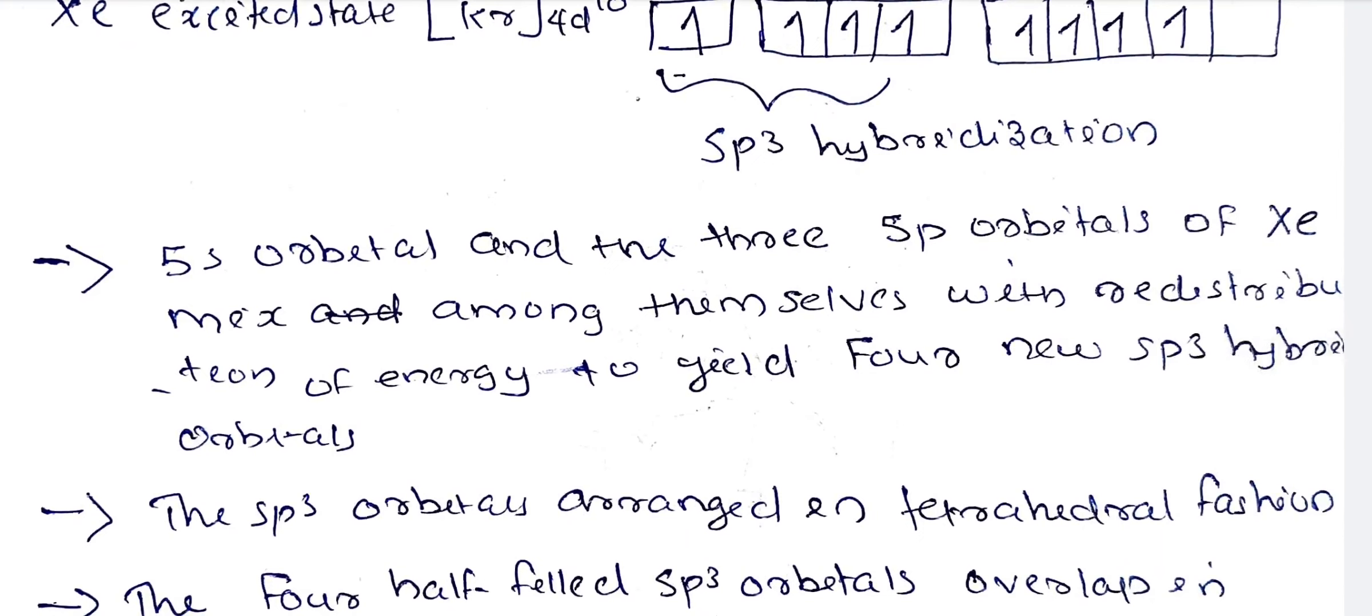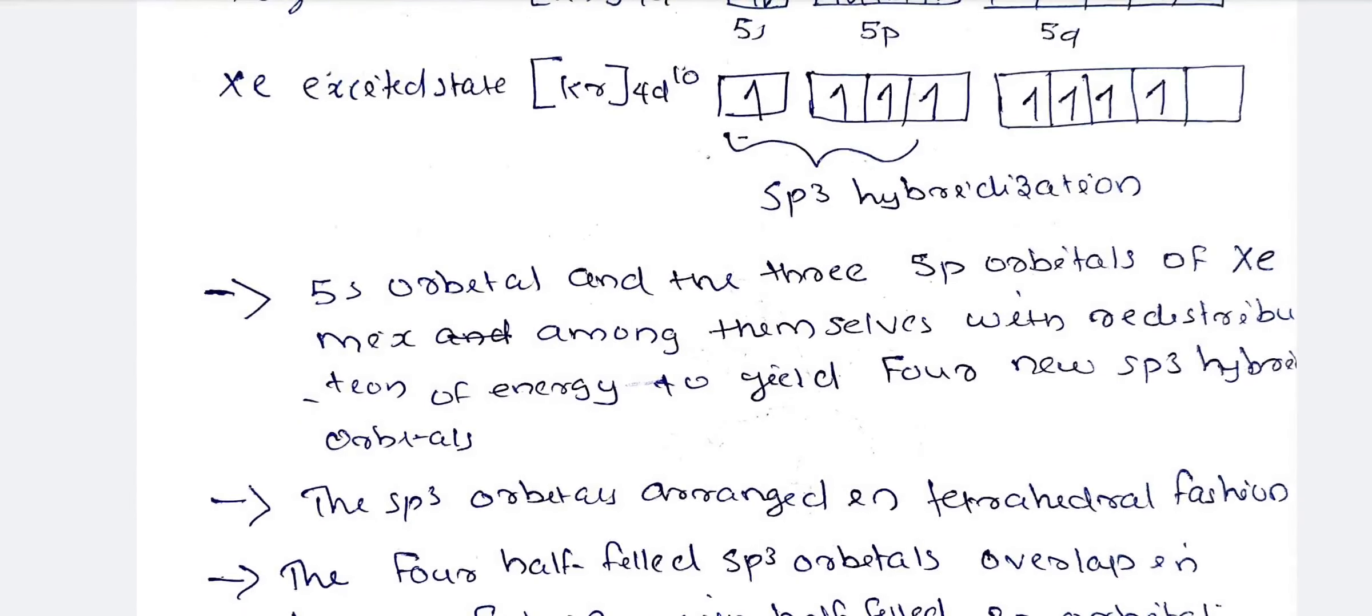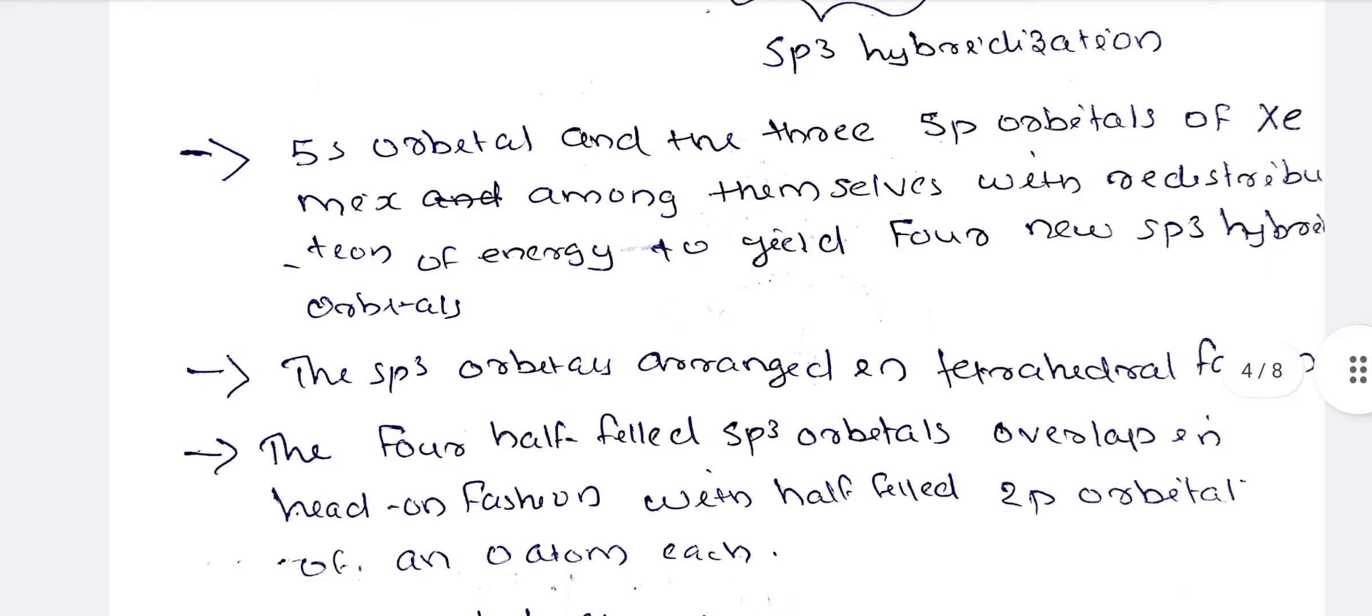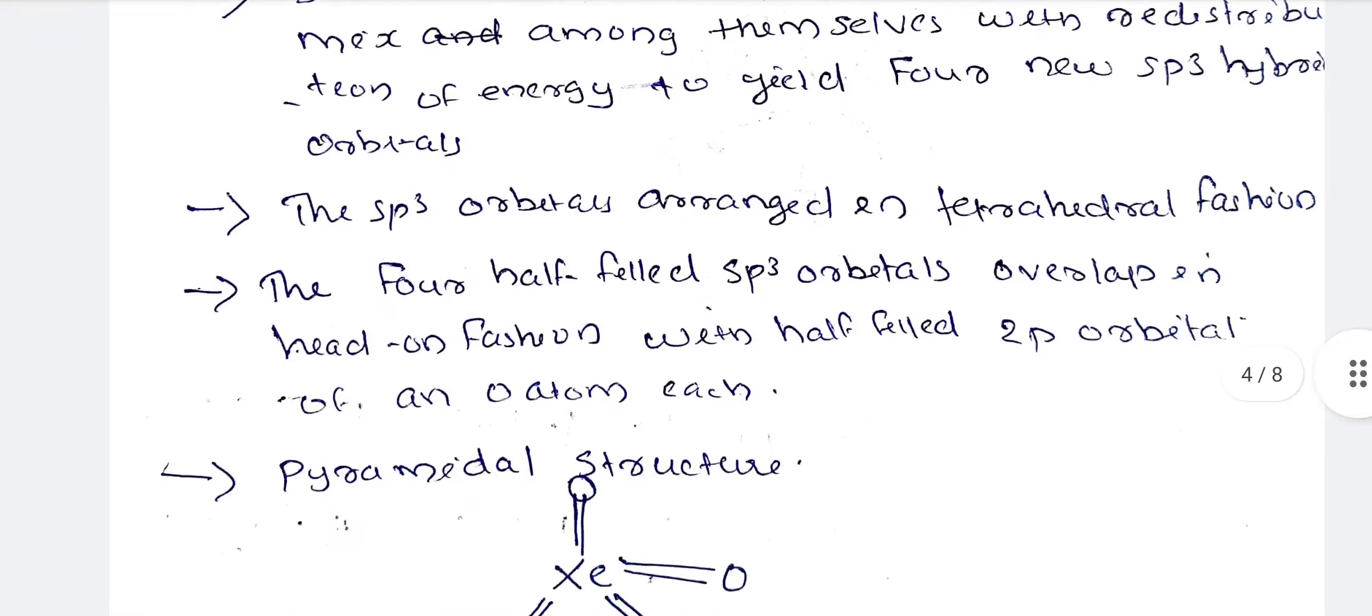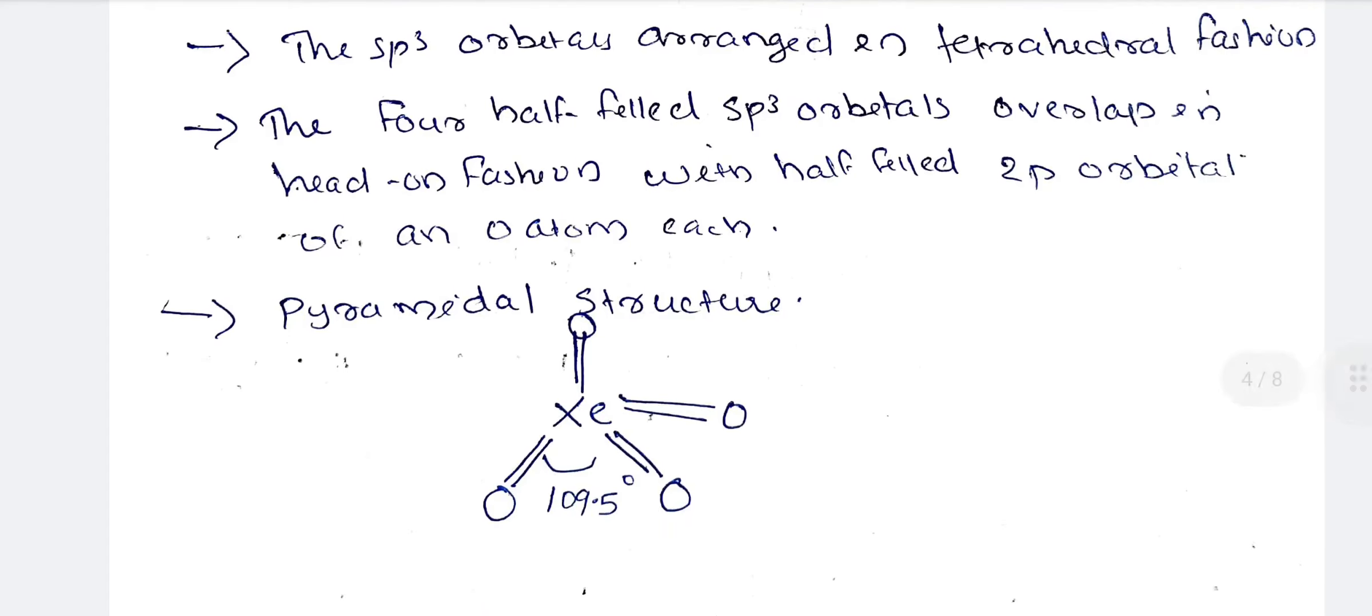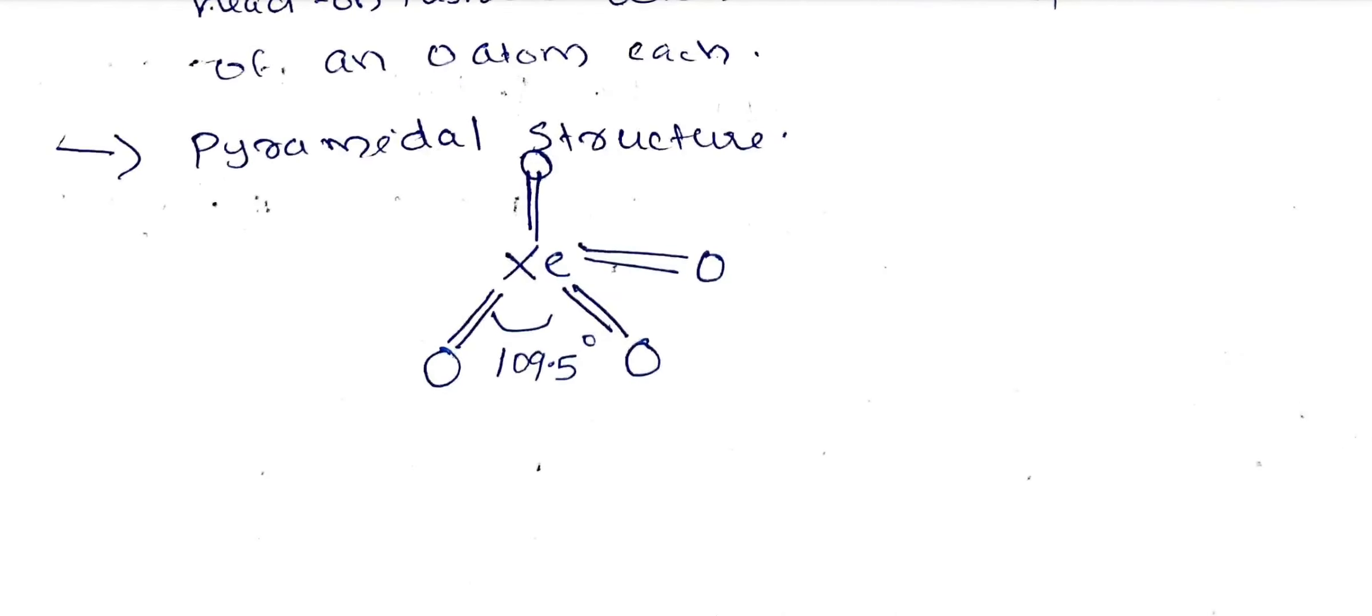The 5s orbital and 3 5p orbitals of Xenon mix among themselves, mix and reshuffle with the redistribution of energy to yield 4 new sp3 hybridized orbitals. These sp3 hybrid orbitals are arranged in tetrahedral fashion. The 4 half-filled sp3 orbitals overlap in head-on fashion with the half-filled 2p orbitals of oxygen atom. The structure is tetrahedral with angle of 109.5 degrees.